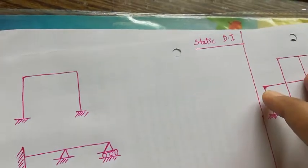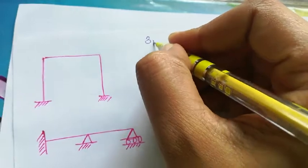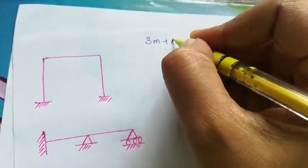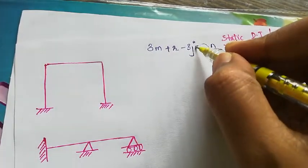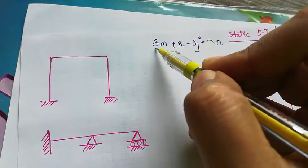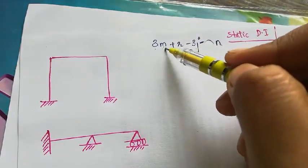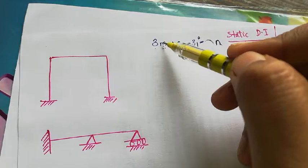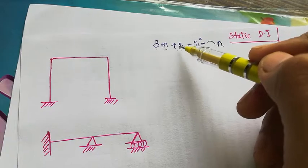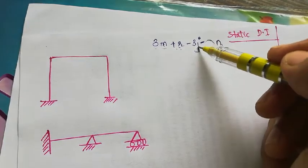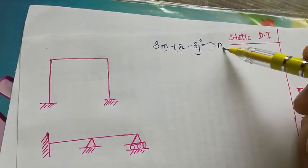For that, whenever we are dealing with a plane structure, we have the equation: 3m + r - 3j - n. What do m, r, j, and n stand for? m stands for number of members, r stands for number of external reactions, j stands for number of joints.